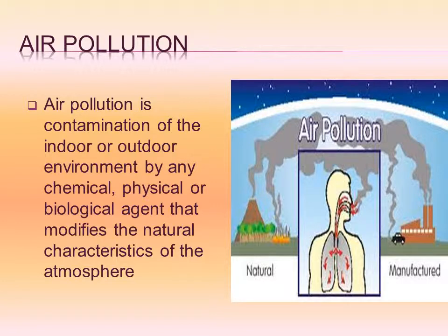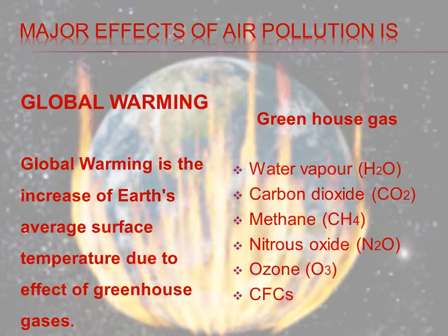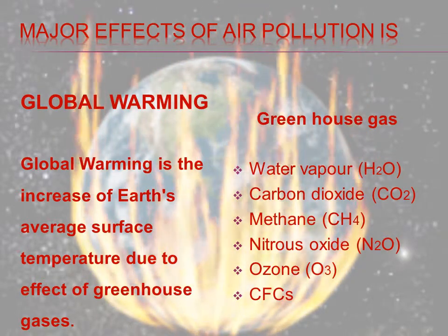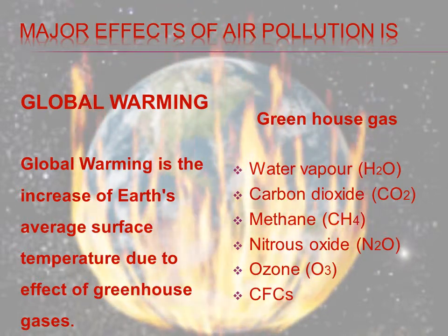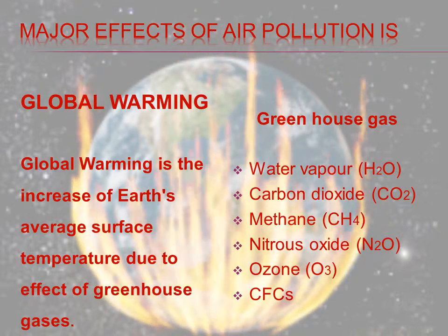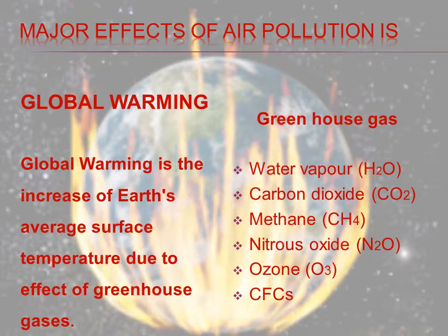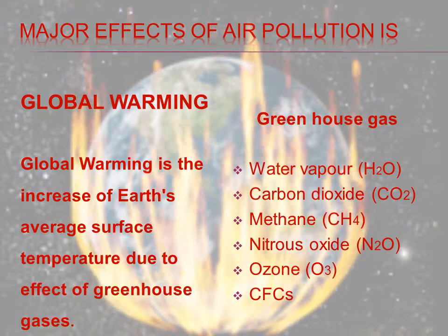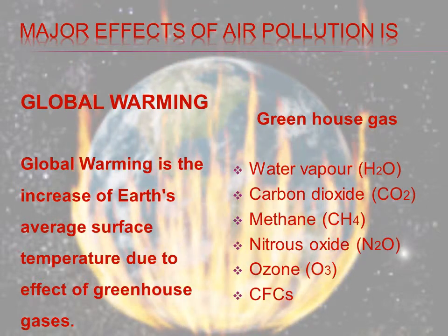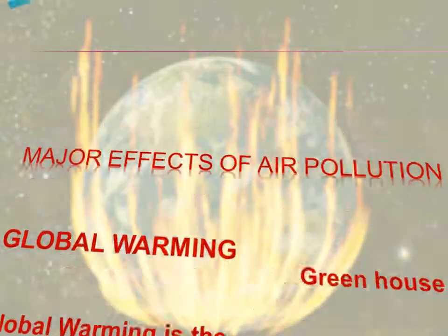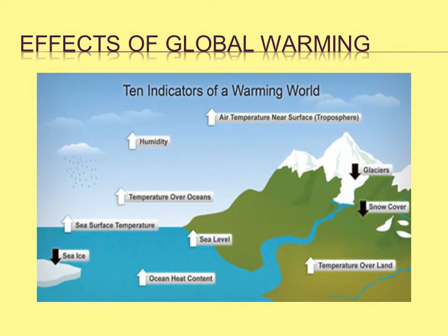Air pollution is the contamination of indoor and outdoor environments by any chemical, physical, or biological agent that modifies the natural characteristics. Pollution can be caused by both natural and human actions. A major effect of pollution is global warming — increased average temperatures caused by carbon dioxide emissions from burning fossil fuels or deforestation, which absorb heat and keep the Earth warm. This is the greenhouse gas effect. Ten indicators of a warming world include: glaciers, sea ice cover decreasing, temperature of land and tropical rainforests rising, humidity increasing, and ocean heat content increasing.